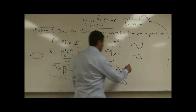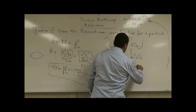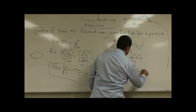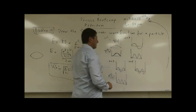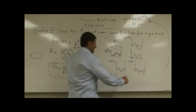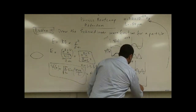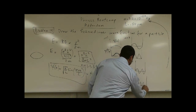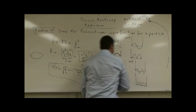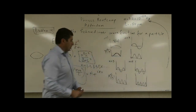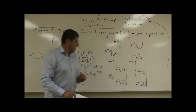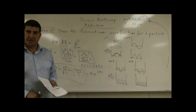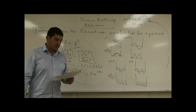In the n equals 4 state, it goes up, down, up, down, and then the probability density would also oscillate with four peaks. So I'm drawing the wave function and its square — that is the answer for the first question.